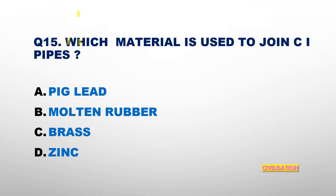Question number 15: Which material is used to join CI pipe? Options: Pig Lead, Molten Rubber, Brass, or Zinc? The answer is Pig Lead.